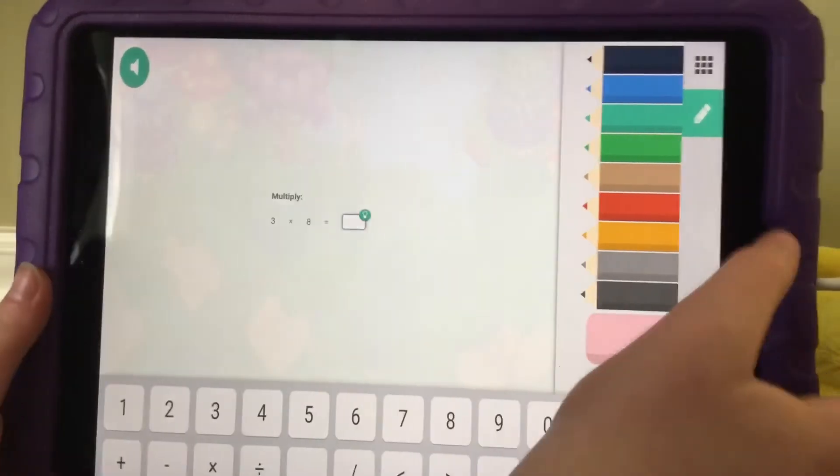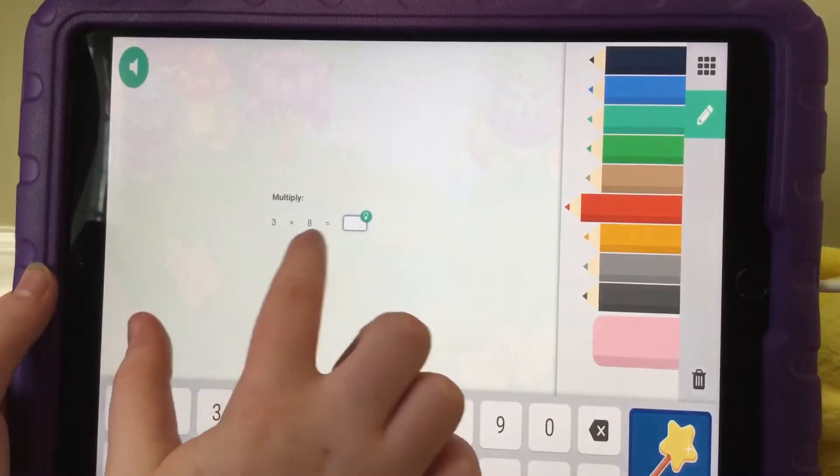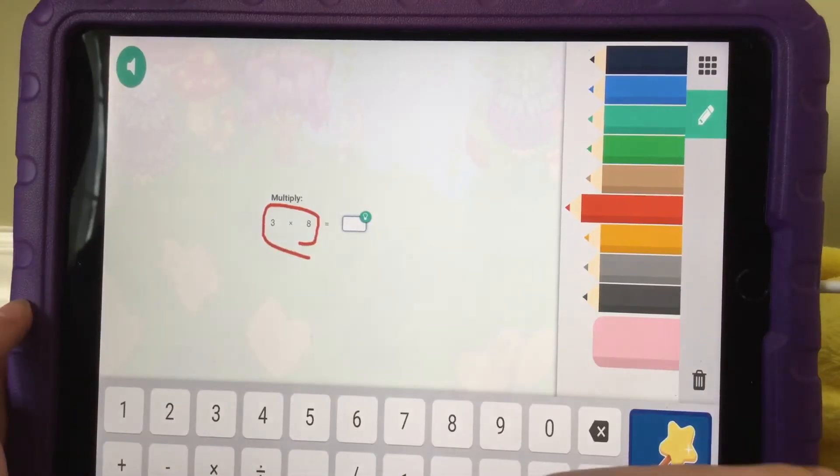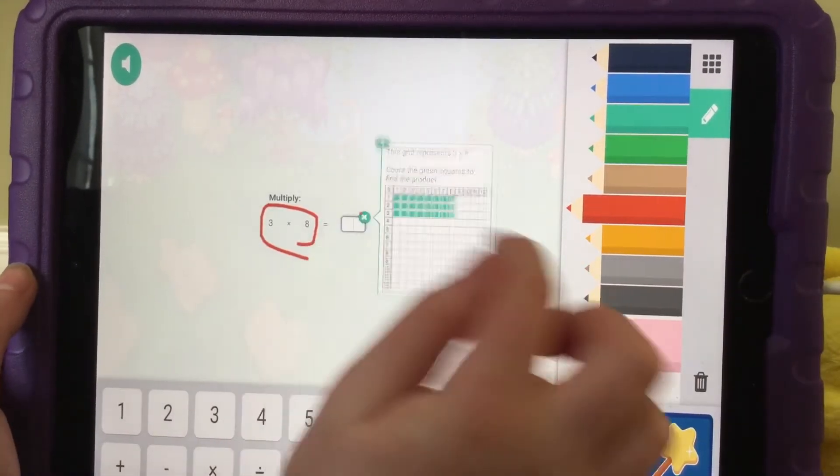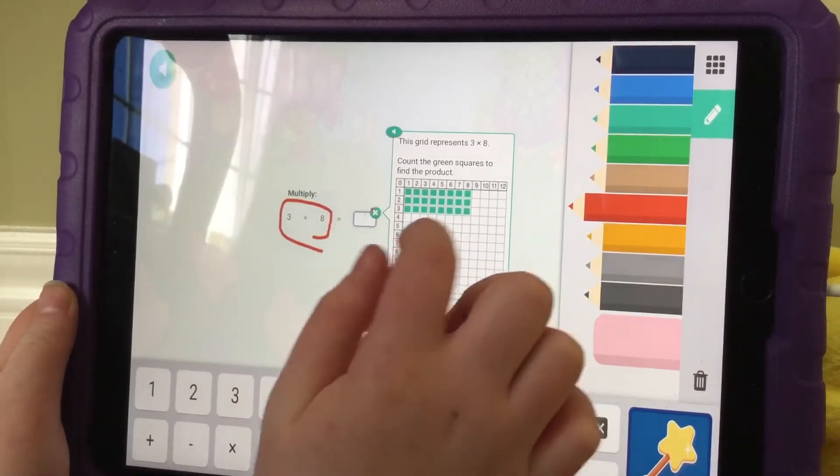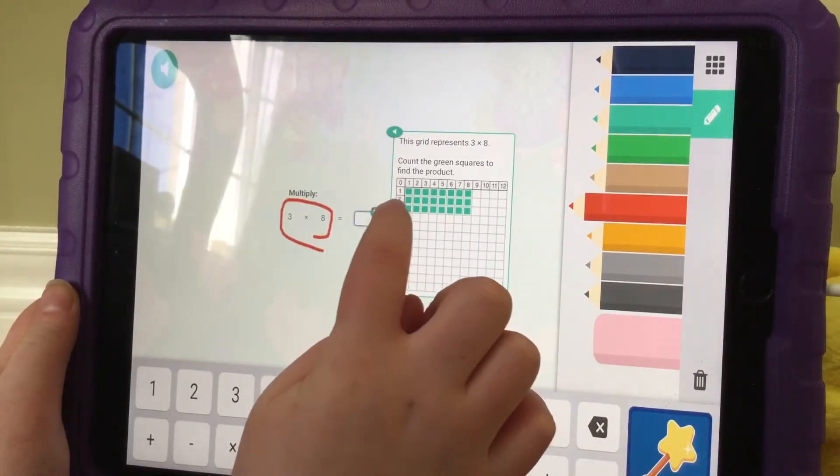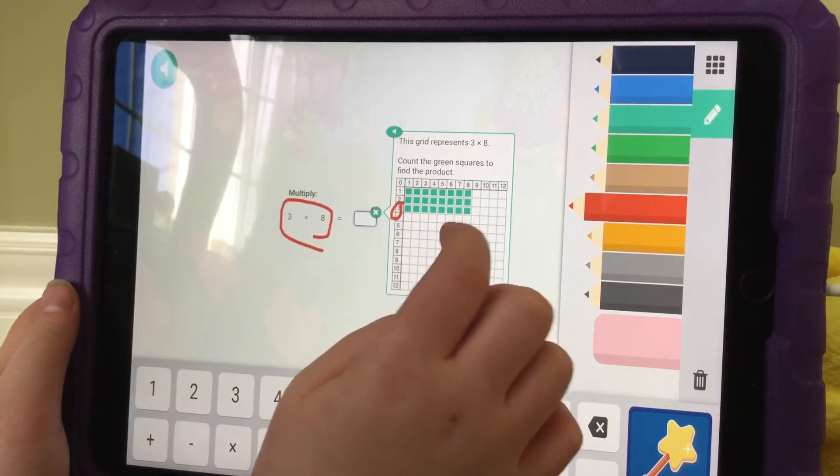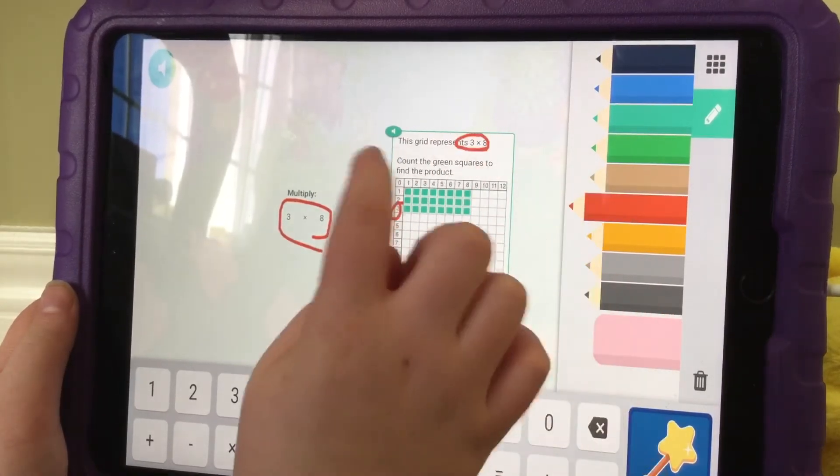As you can see, we have to find out 3 times 8. We'll get this chart, then array, and as you can see, it's filled in 3 times 8 right here.